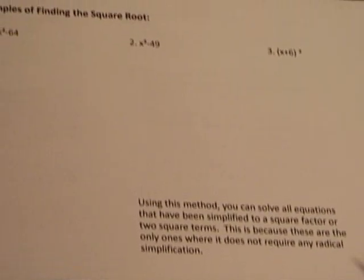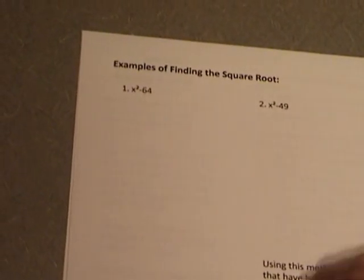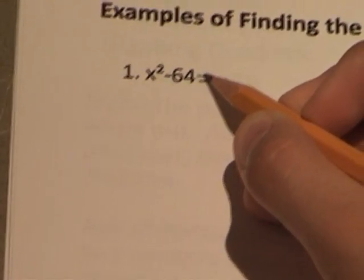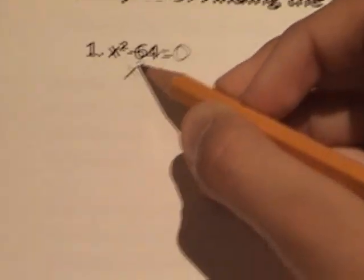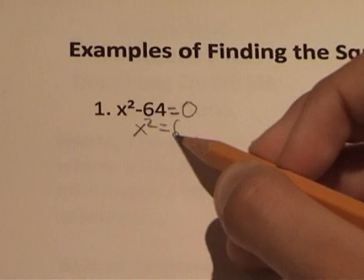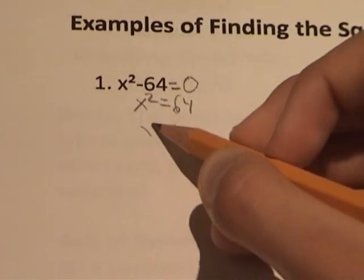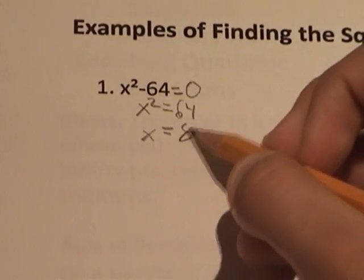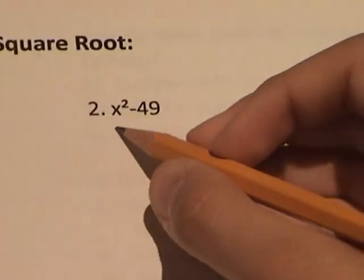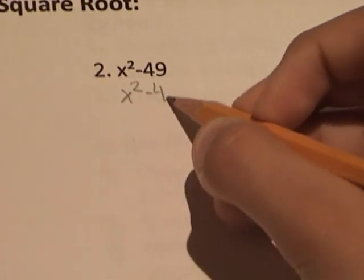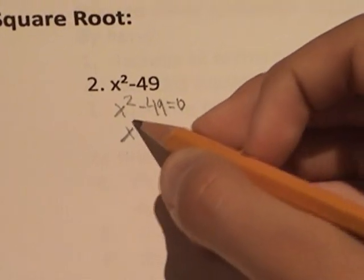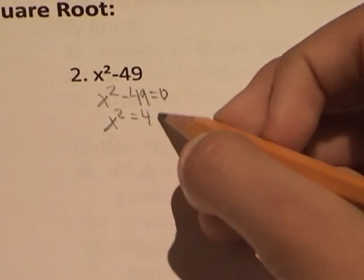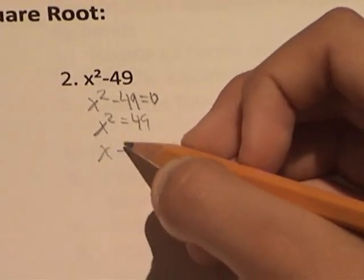Now here are some examples of finding the square root. For x squared minus 64, set the equation equal to 0, then x squared equals 64, so x equals 8. Now, x squared minus 49 equals 0, setting it equal to 0, x squared equals 49, so x equals 7.